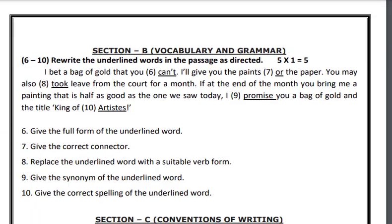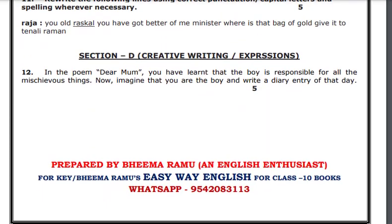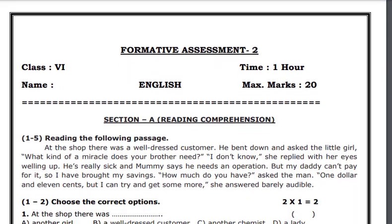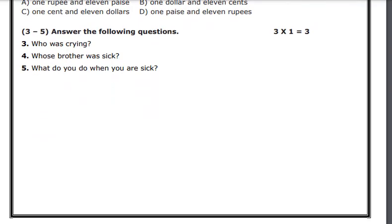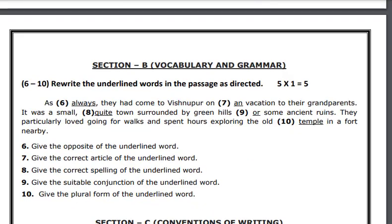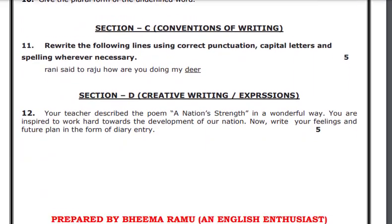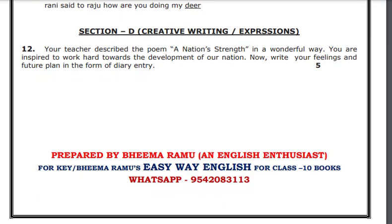Class 7 contains four sections. Last but not least, class 6: reading comprehension, vocabulary and grammar, conventions of writing, and creative writing or expressions. Hope this video will definitely help you very much. Thank you.